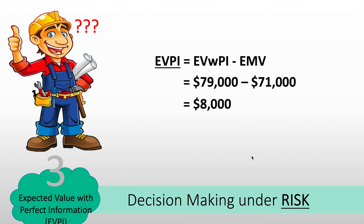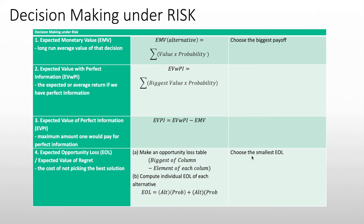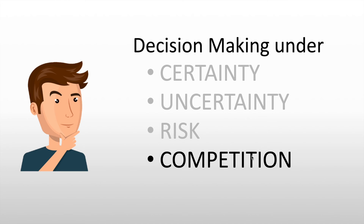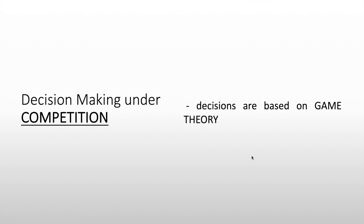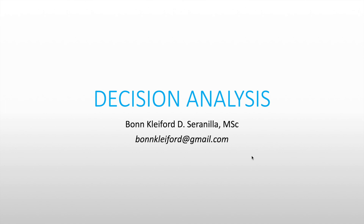That is our decision making under risk, and this is our summary table for each computation. Lastly, we have decision making under competition, which is based on Game Theory. An introduction to Game Theory will be given in another video, so stay tuned. Thank you very much — this has been the decision analysis tutorial, Parts 1 and 2. This is Bonkley for Cyranoia. Thank you for listening.